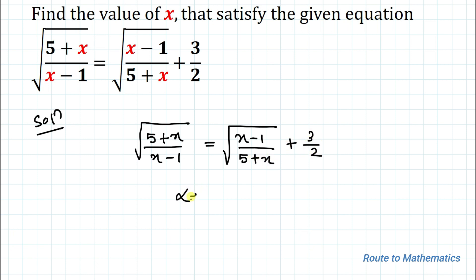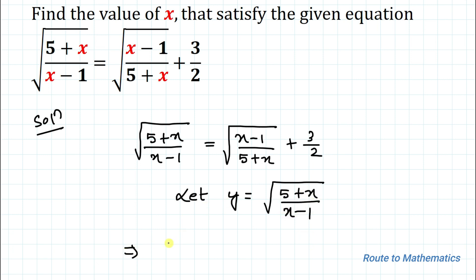In the next step, let's take y equals to root under (5 plus x) divided by (x minus 1). Now, substituting the value of y, we have y equals to 1 by y plus 3 by 2.